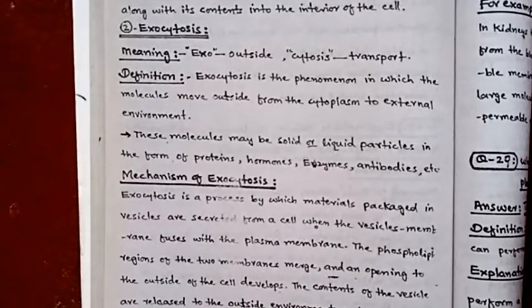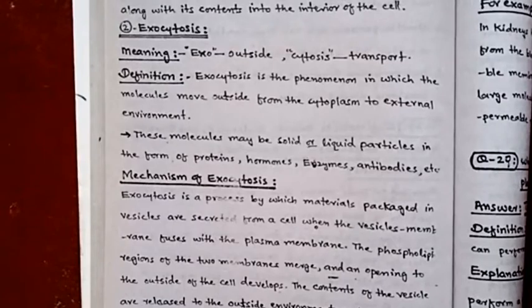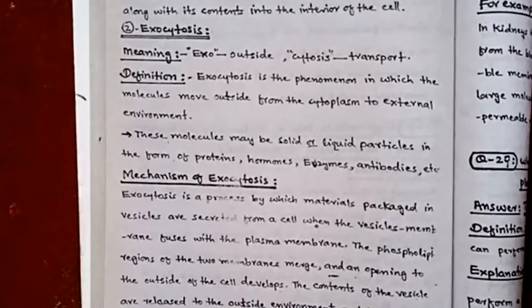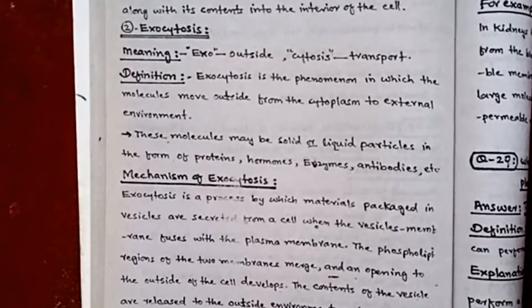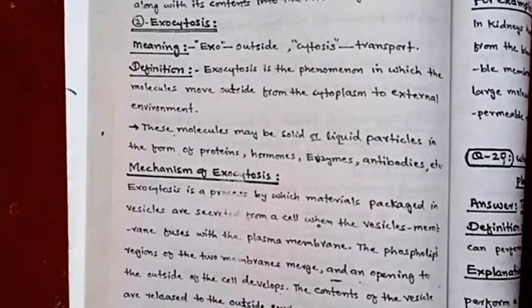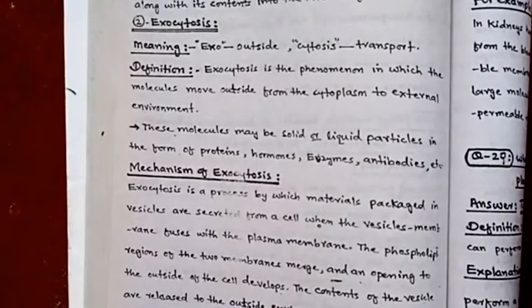The vesicle fuses with the plasma membrane, and the vesicle membrane is incorporated into the plasma membrane. The material remains and the membrane fuses with the plasma membrane.